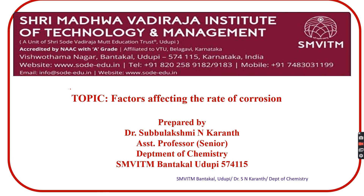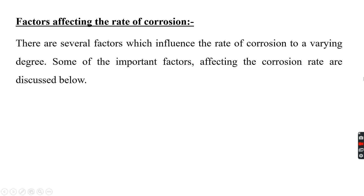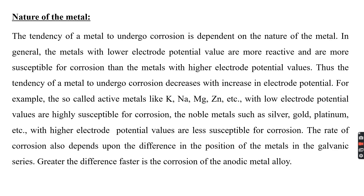The first factor that decides the rate of corrosion is the nature of the metal. There are certain factors which influence the rate of corrosion to a varying degree. An important factor among them is the nature of the metal. The tendency of a metal to undergo corrosion is dependent on its nature.